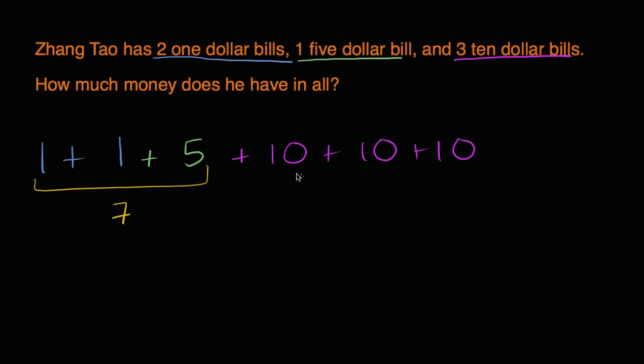so these are going to be $7. And then 10 plus 10 plus 10, that's three 10s. So that's going to be $30. Now what's seven ones plus three 10s? Or what's seven plus 30? Well, that's going to be $37. So Zhang Tao has $37 in all.